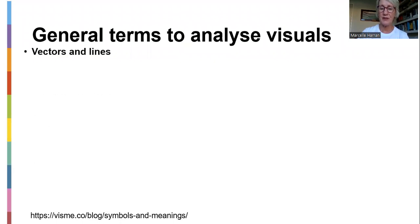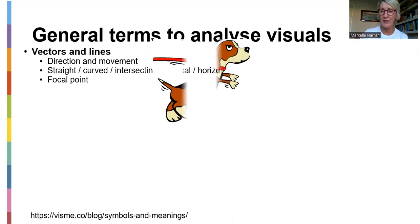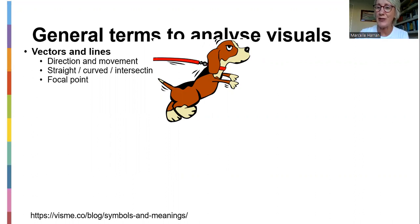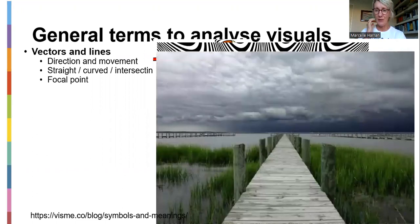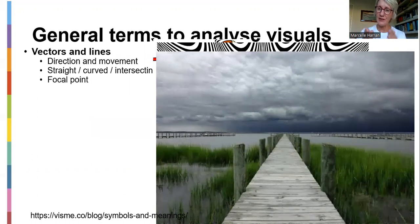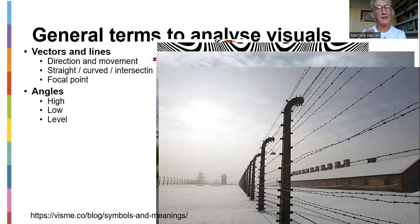General terms to analyze visuals also include vectors and lines — the little lines on cartoons and pictures which show movement. They can be straight, curved, intersecting, vertical, or horizontal, and they create a focal point. Looking at this dog cartoon, the lines by the paws, head, leash, and tail all show movement. Lines within pictures also draw you toward a focal point — like a pier moving out to sea, or a prison fence drawing you inward.